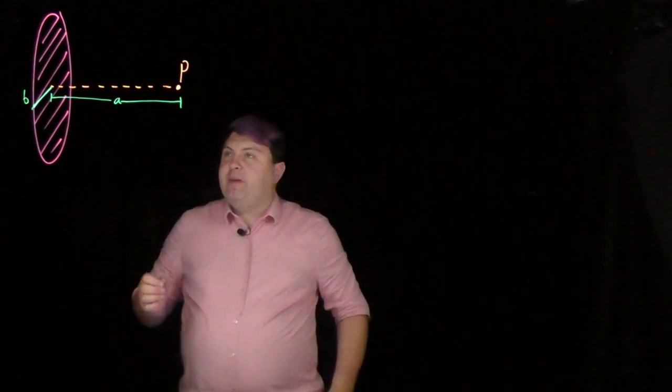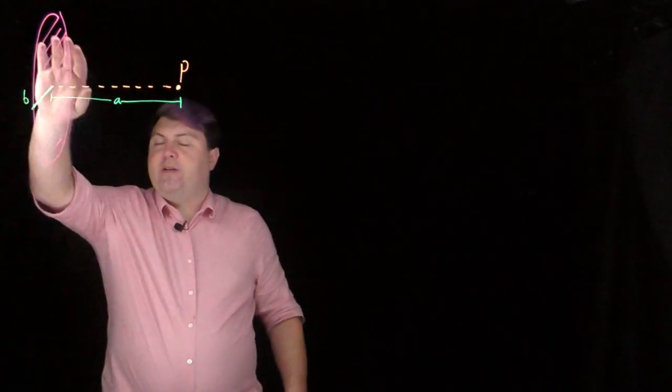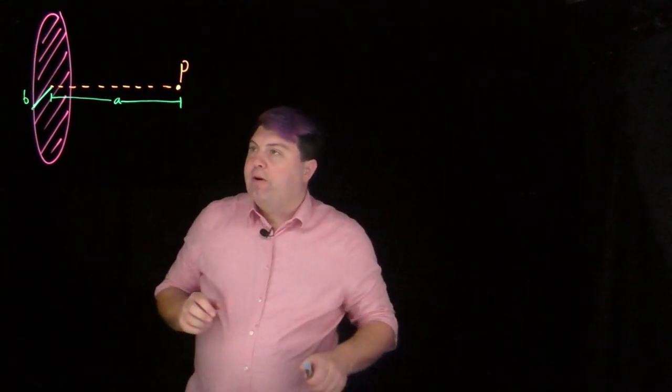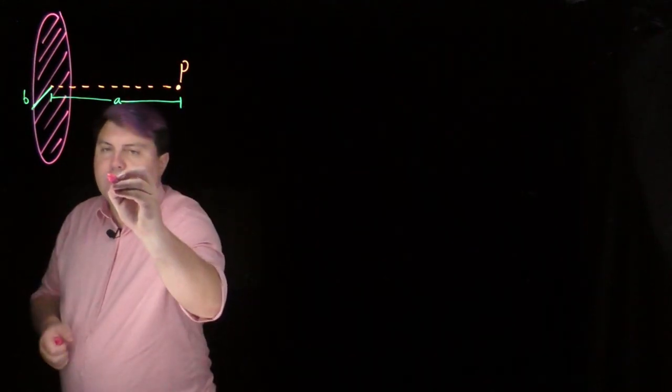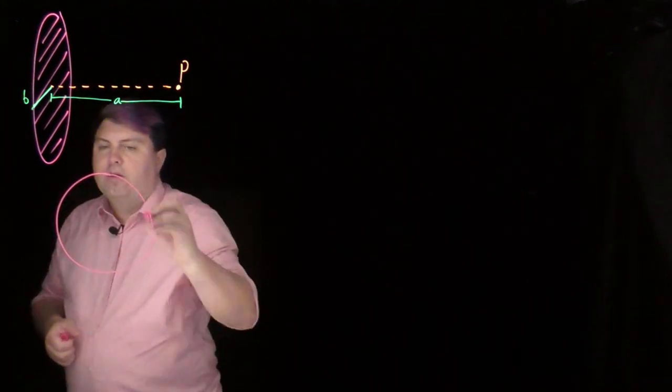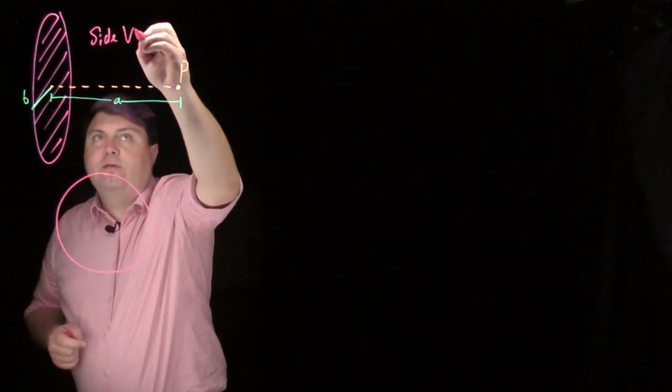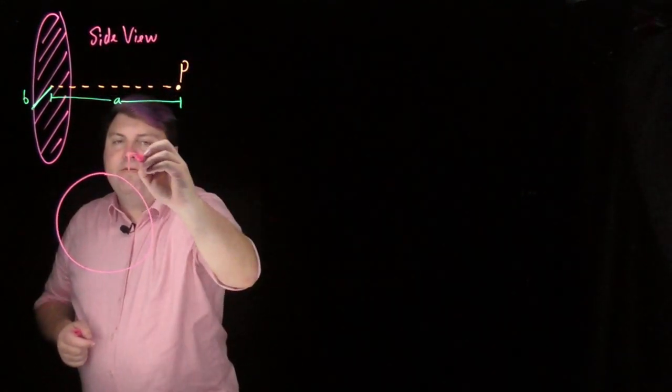Welcome. We have here a disk of continuous charge distribution, so think of a filled in circle, not a hollow circle, but a full disk. And we want to find the electric field from it along its axis. So one thing that we might want to do is we might want to redraw this. This might be a side view, whereas this is a face view.